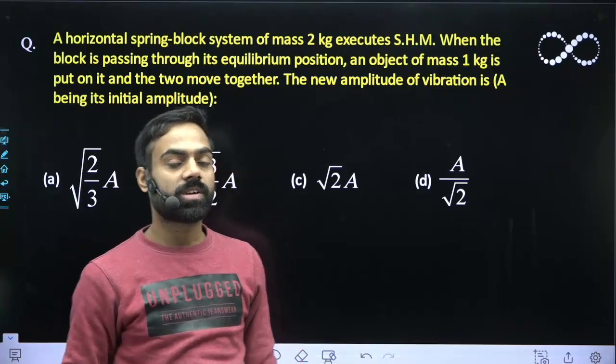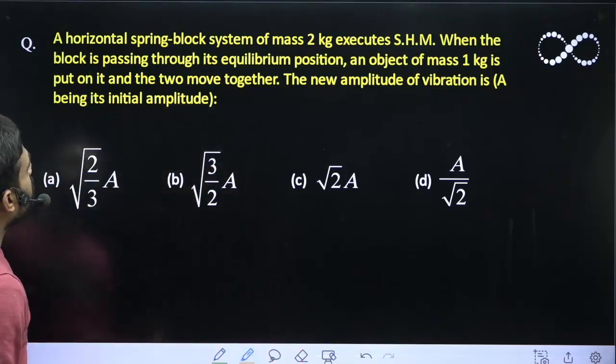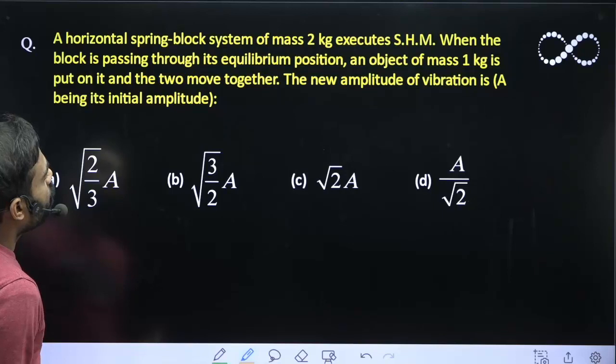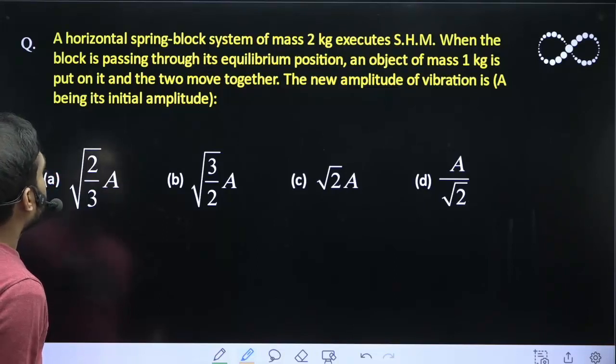Hello students, let us see this question here. A horizontal spring-block system of mass 2 kg executes SHM. When the block is passing through its equilibrium position, an object of mass 1 kg is put on it and the two blocks move together. The new amplitude of vibration is (A being the initial amplitude):